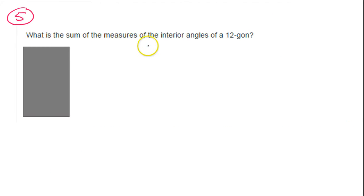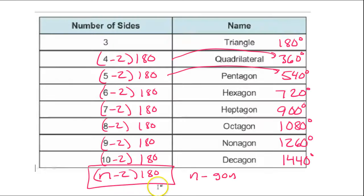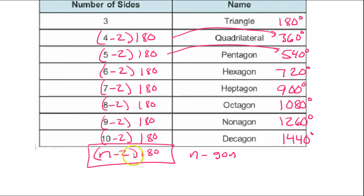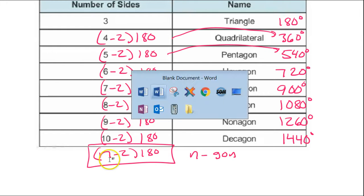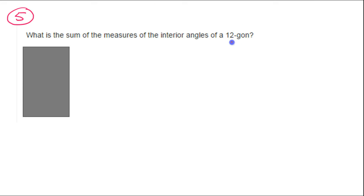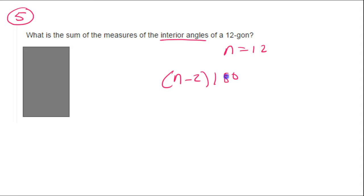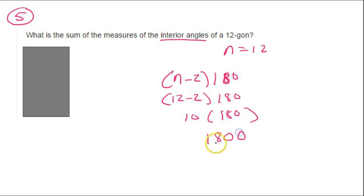Number 5: what is the sum of the measures of the interior angles of a 12-gon? Our chart only goes up to 10, so we use the formula. The total interior angles equals n minus 2 times 180, where n is the number of sides. For a 12-gon, n is 12, so that'll be 12 minus 2 times 180 — that's 10 times 180 — which is 1,800 degrees.